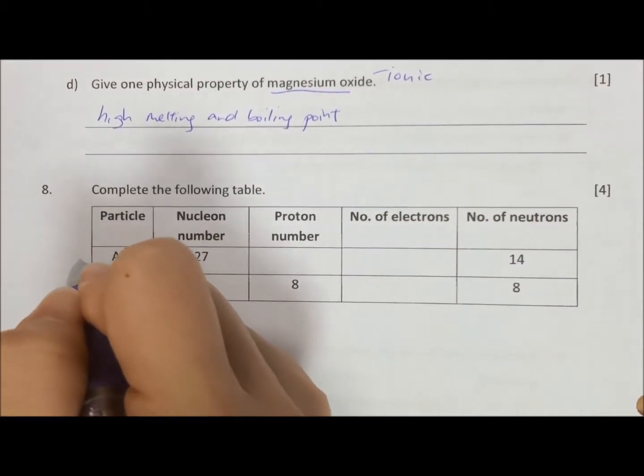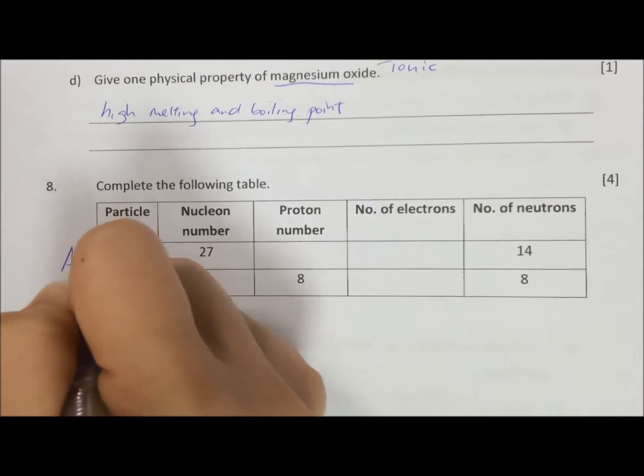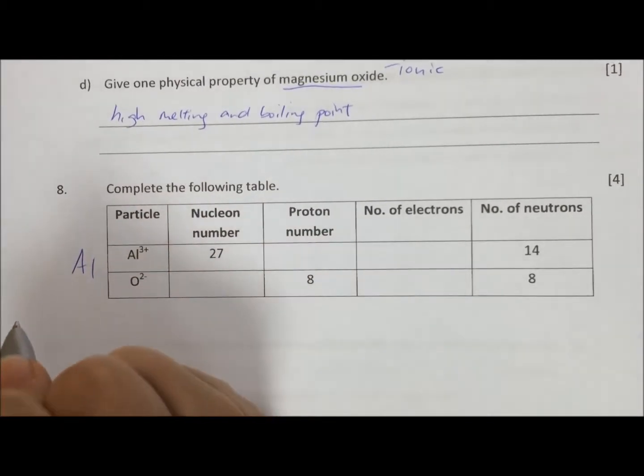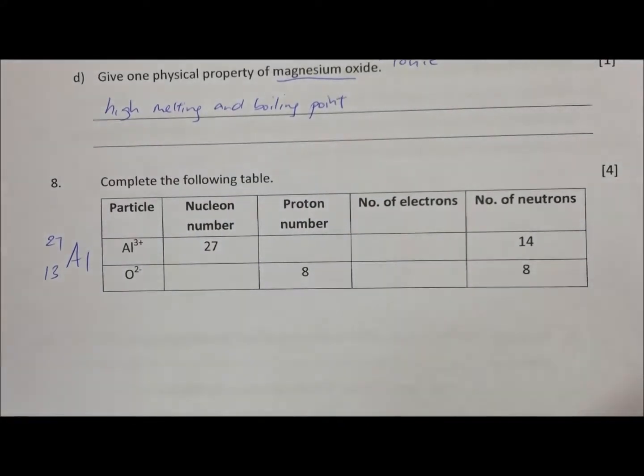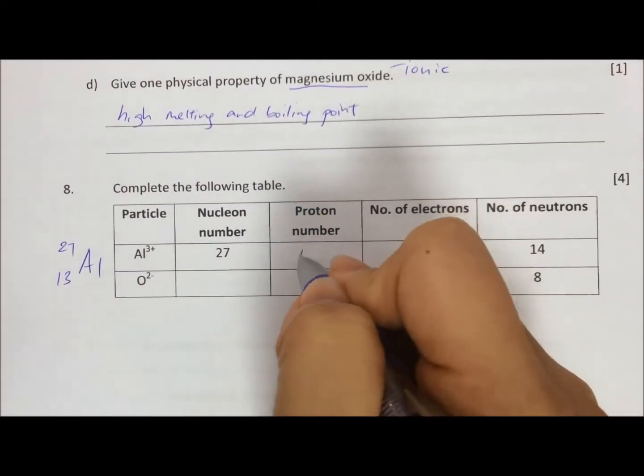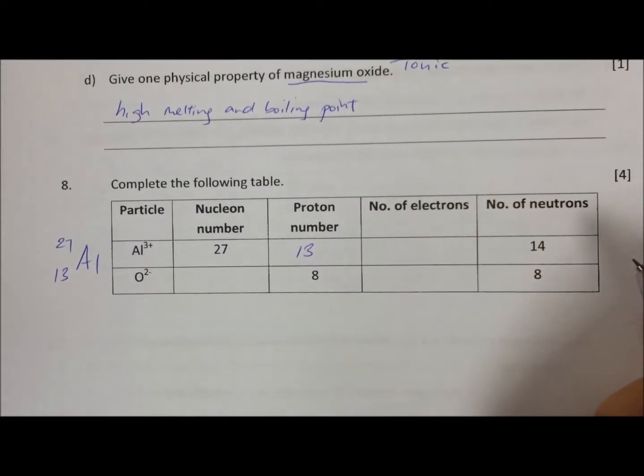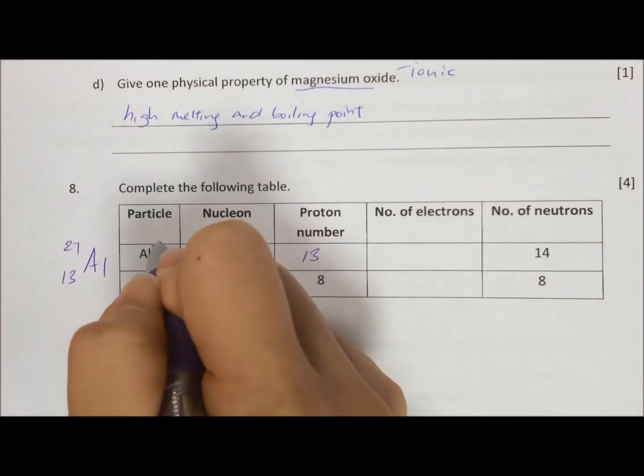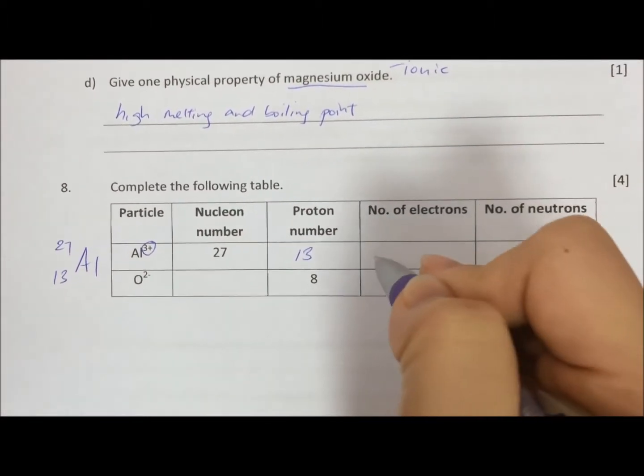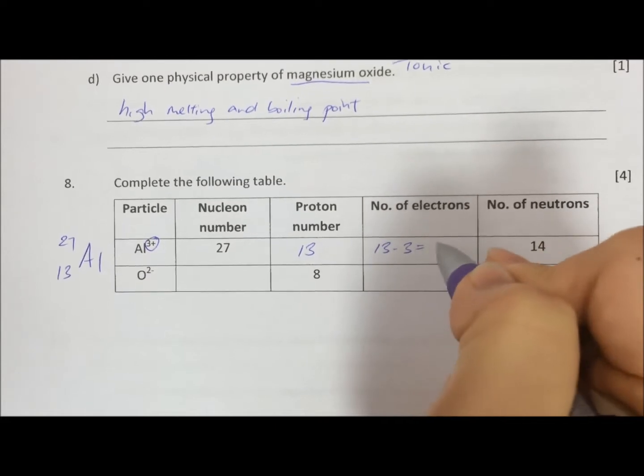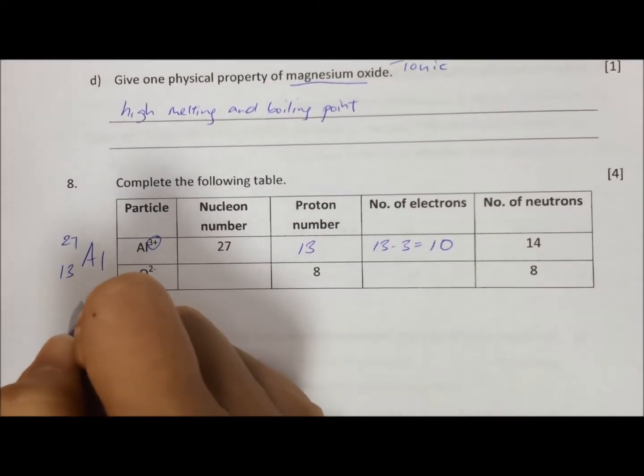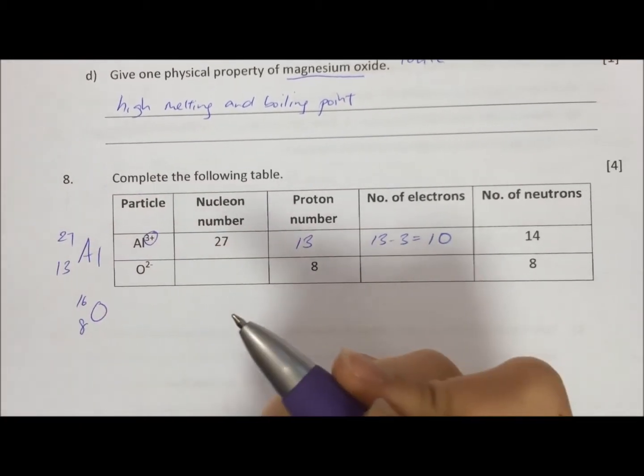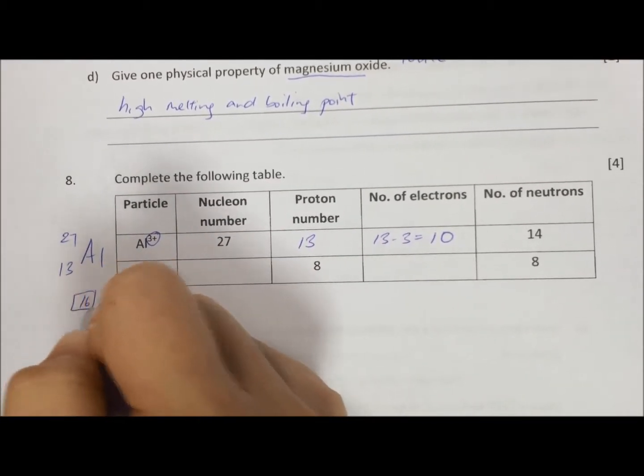Okay, now final one, question 8. Aluminium, refer to the periodic table first. Number on top is 27. Number at the bottom is 13. So proton number is number at the bottom. So it's 13. Number of electrons, you check the sign. It says 3+. 3+ means it lost 3 electrons. So 13 - 3 = 10 electrons. Must always be completely filled. So 10 electrons will give you 2.8.